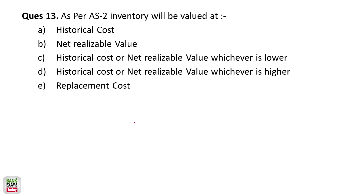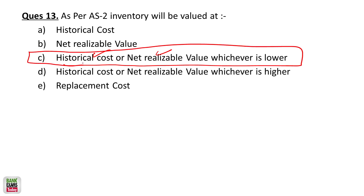As per AS2, inventories should be valued at historical cost or net realizable value, whichever is lower. So the correct valuation method is: lower of historical cost or net realizable value — that is how inventory should be valued according to Accounting Standard 2.